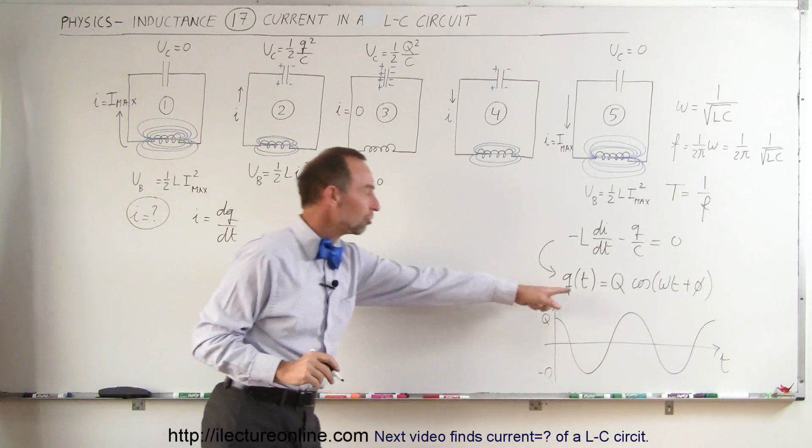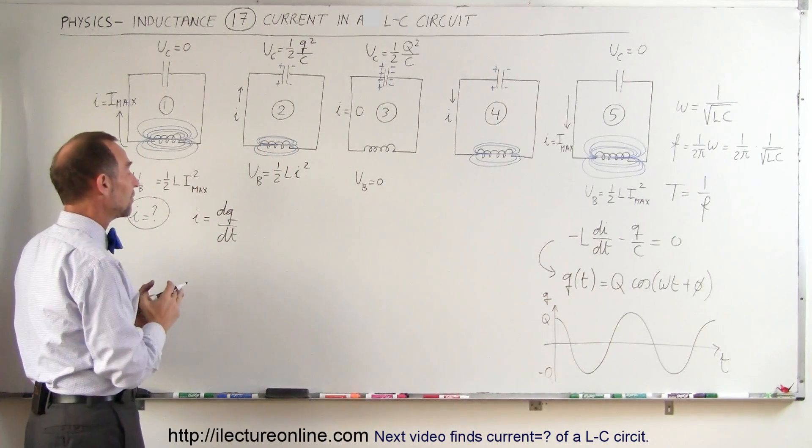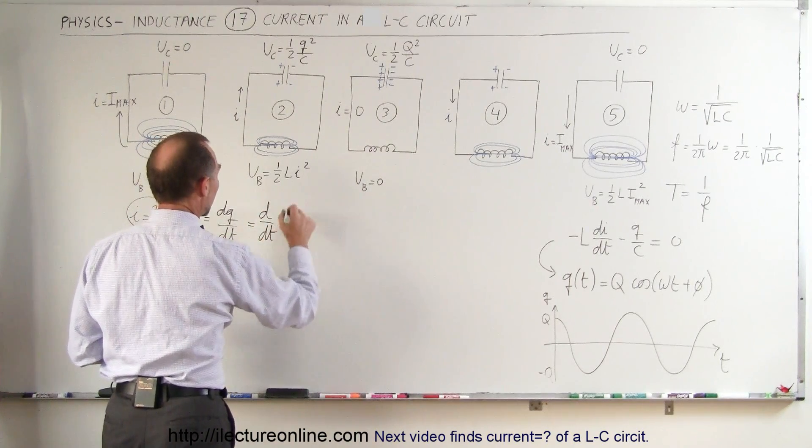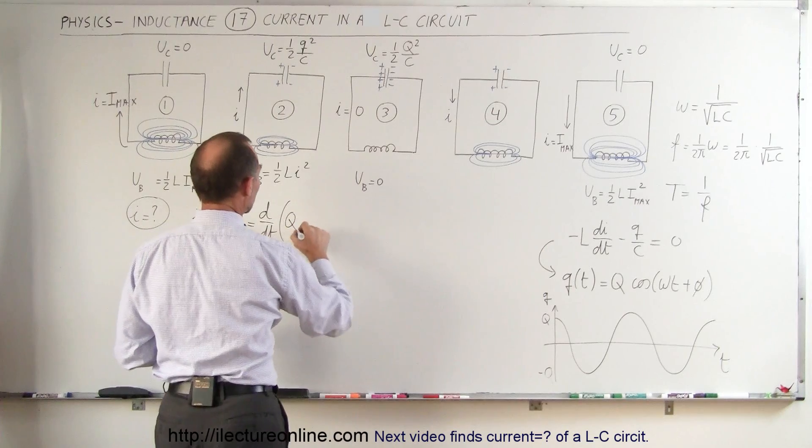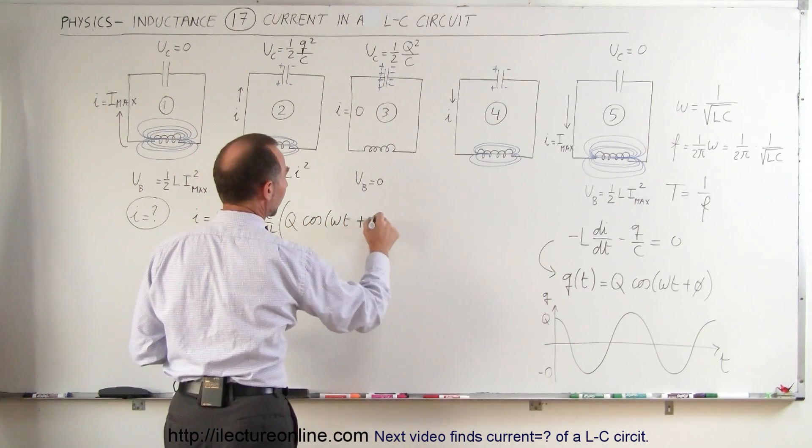And since we're ready to find the charge as a function of time, to find the current all we have to do is take the derivative of that. So therefore this is equal to the d dt of Q times the cosine of omega t plus phi.